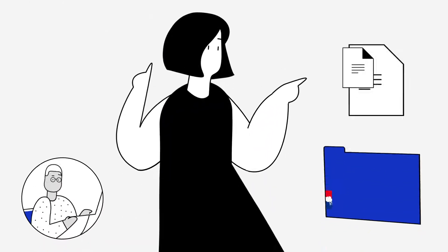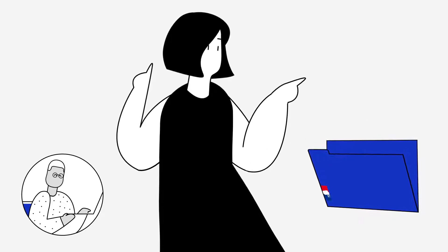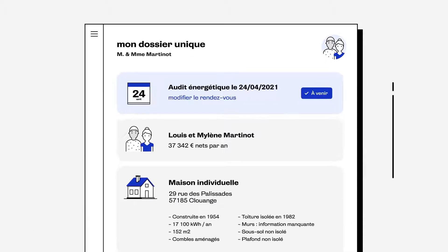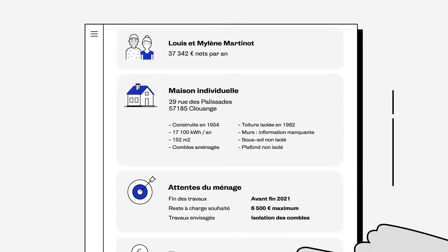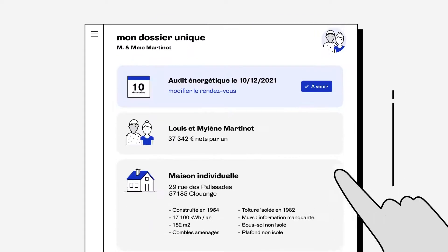At each step, Louis can count on his accompanier to handle all exchanges with carefully chosen contacts. At the end of the appointment, a date for the energy audit is set. At a glance, Louis can find all the information from his meeting and upcoming appointments in his unique file.